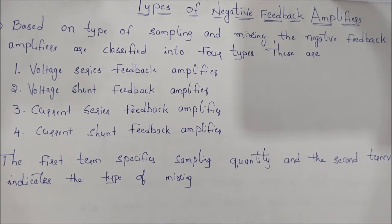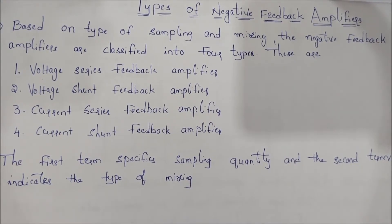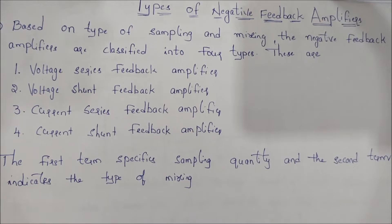Based on the type of sampling and mixing, the negative feedback amplifiers are classified into 4 types: voltage series feedback amplifier, voltage shunt feedback amplifier, current series feedback amplifier, and current shunt feedback amplifier.